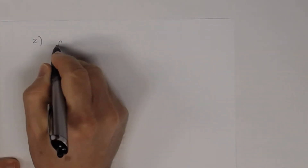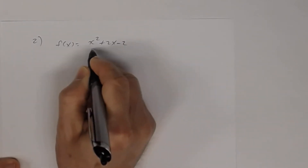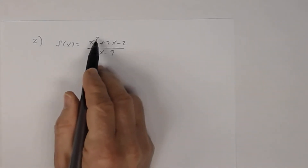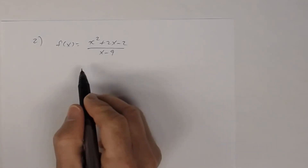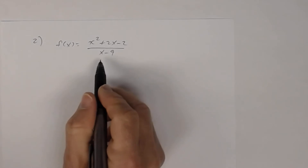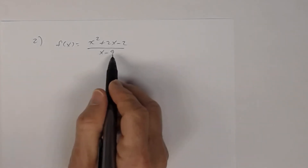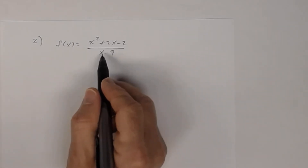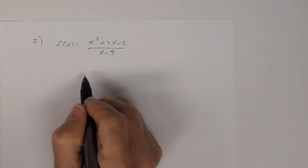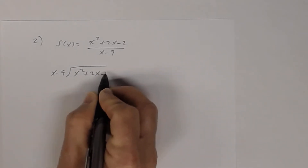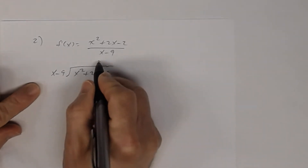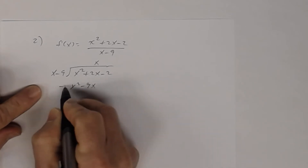In number 2, f of x equals x squared plus 2x minus 2 divided by x minus 9. The degree of the numerator is 2 and the degree of the denominator is 1 — since two is one more than one, there is a slant asymptote. We'll find it two ways. Using long division: x minus 9 divides into x squared plus 2x minus 2. x into x squared gives x; x times (x minus 9) gives x squared minus 9x. Subtracting gives 11x.